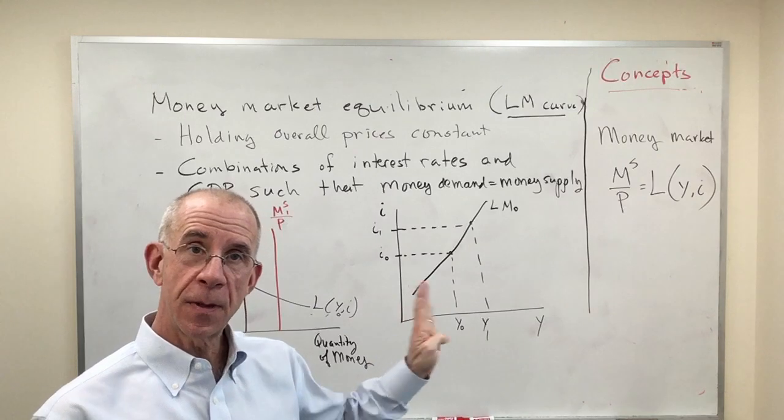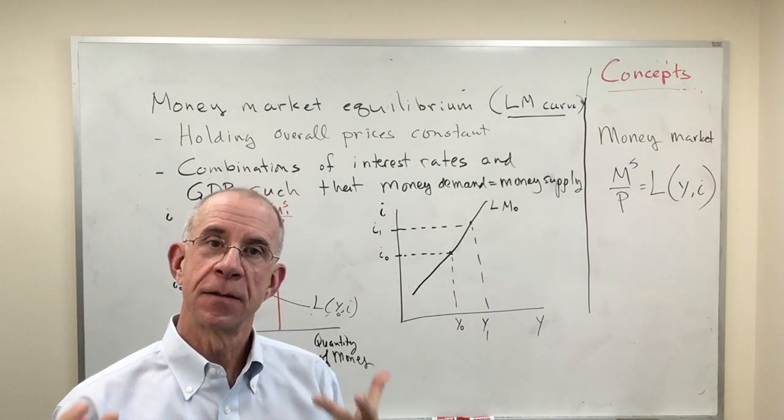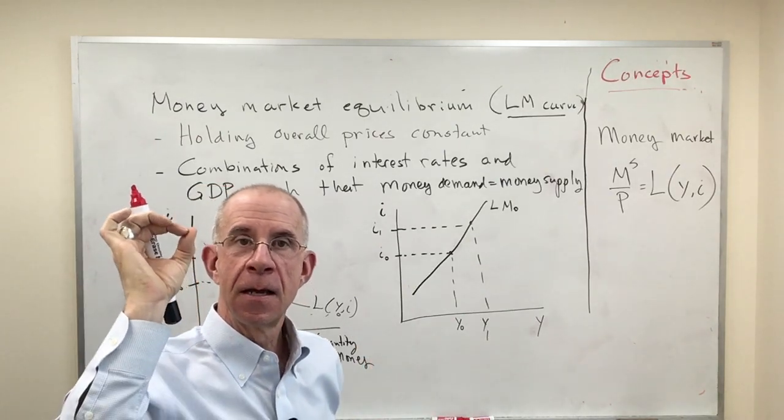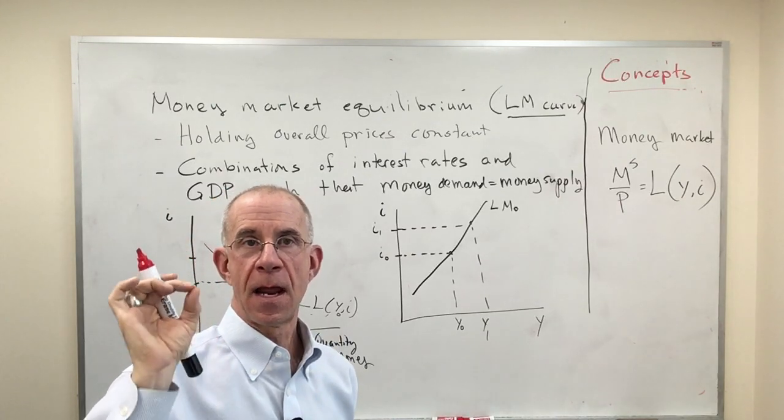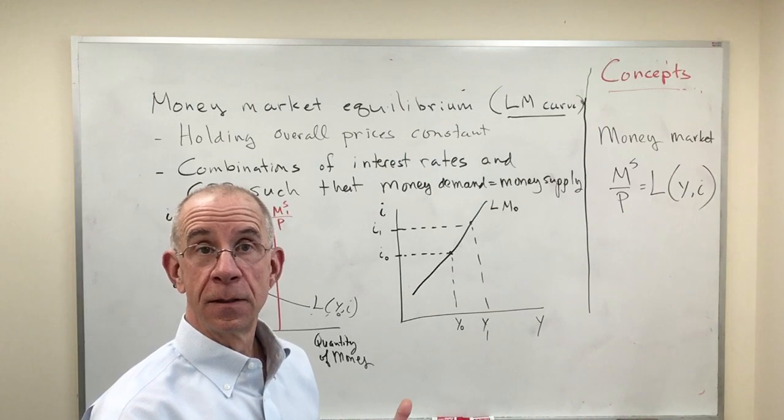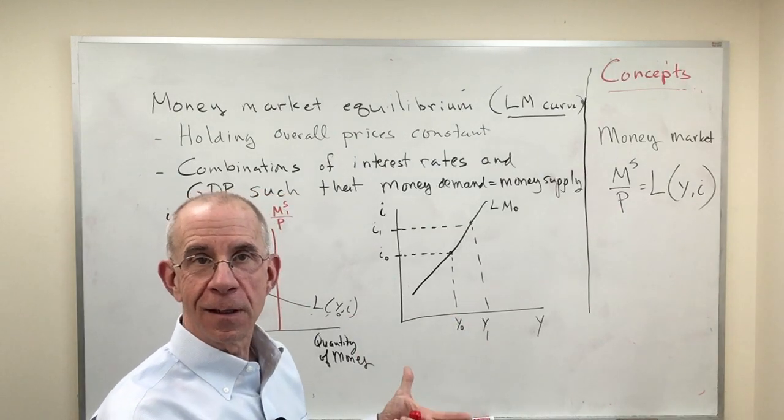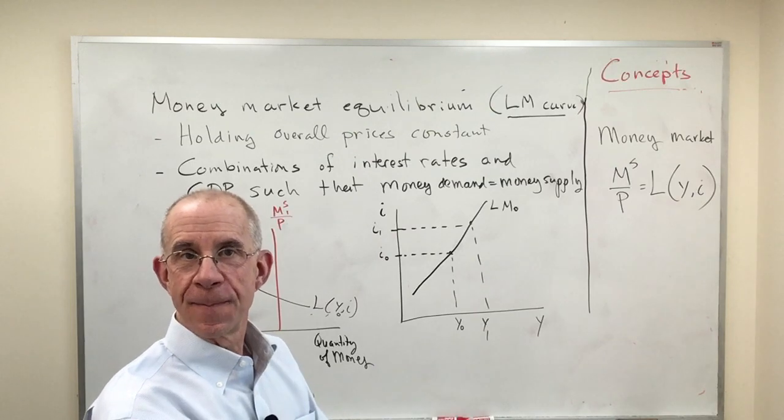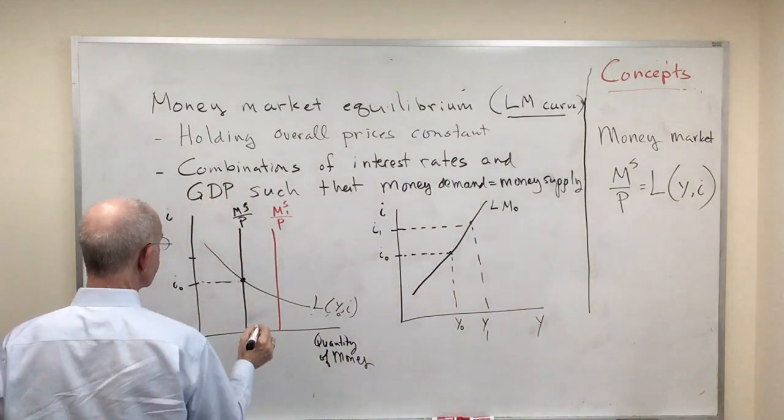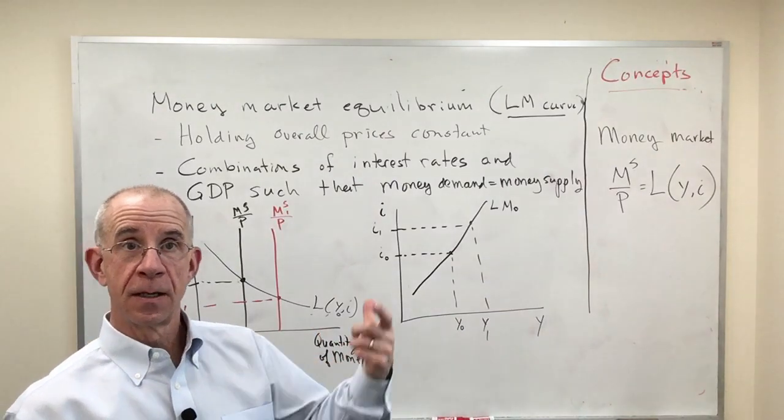That shifts the supply of money to the right because there's more currency in circulation. The only way people will be willing to hold more cash is if the interest rate falls. You need to think about this as the opportunity cost for money. If you've got more money in circulation, the only way I'm going to be willing to hold it is if the interest rates on bonds fall. I'll say, okay, it's not that big a deal to hold the cash because holding my wealth in bonds is not as attractive since the interest rates have fallen.